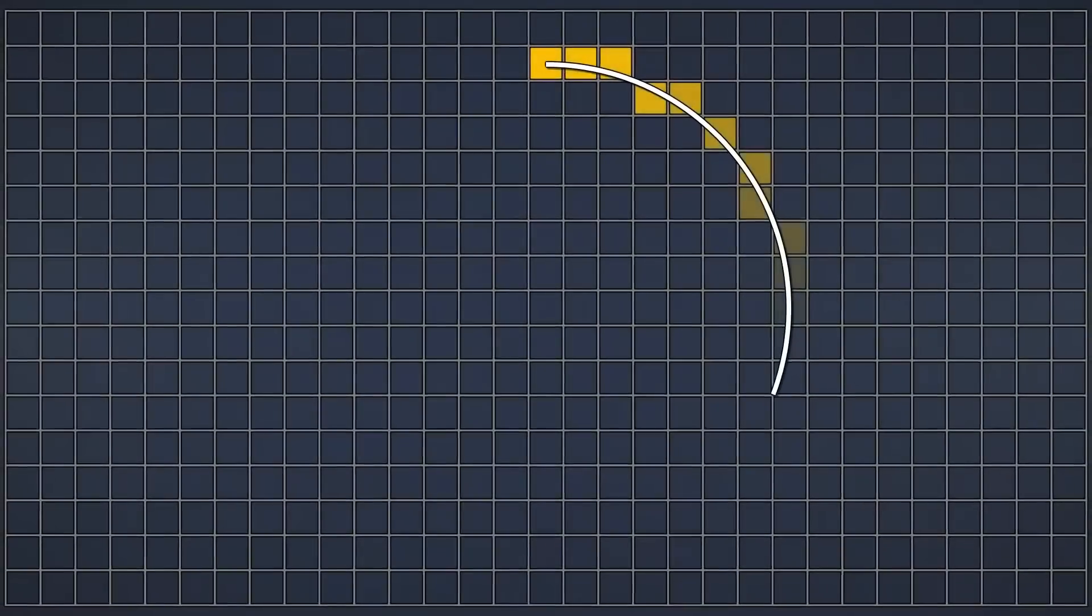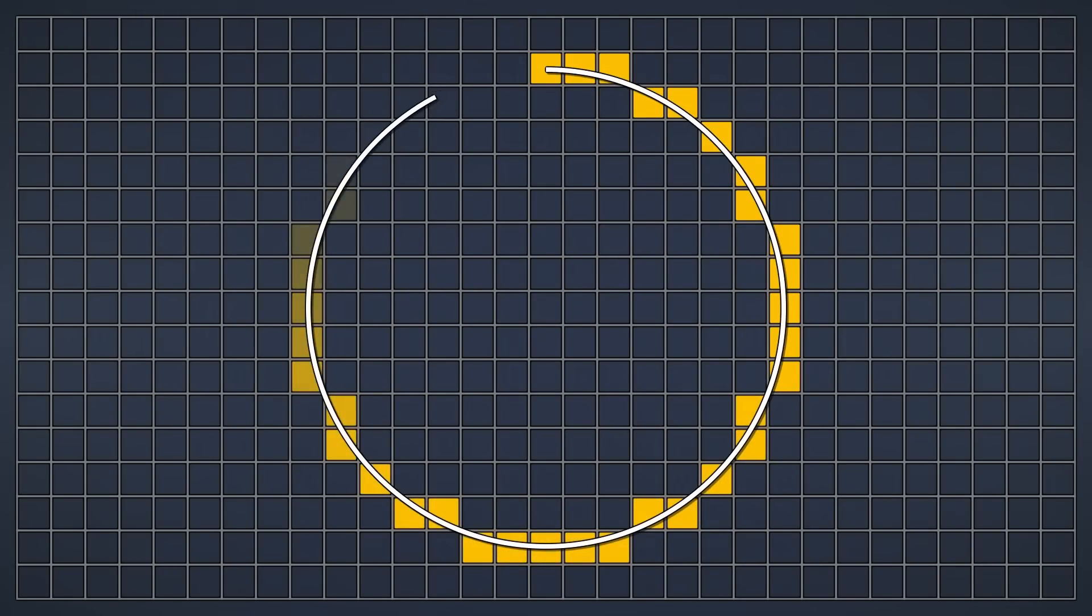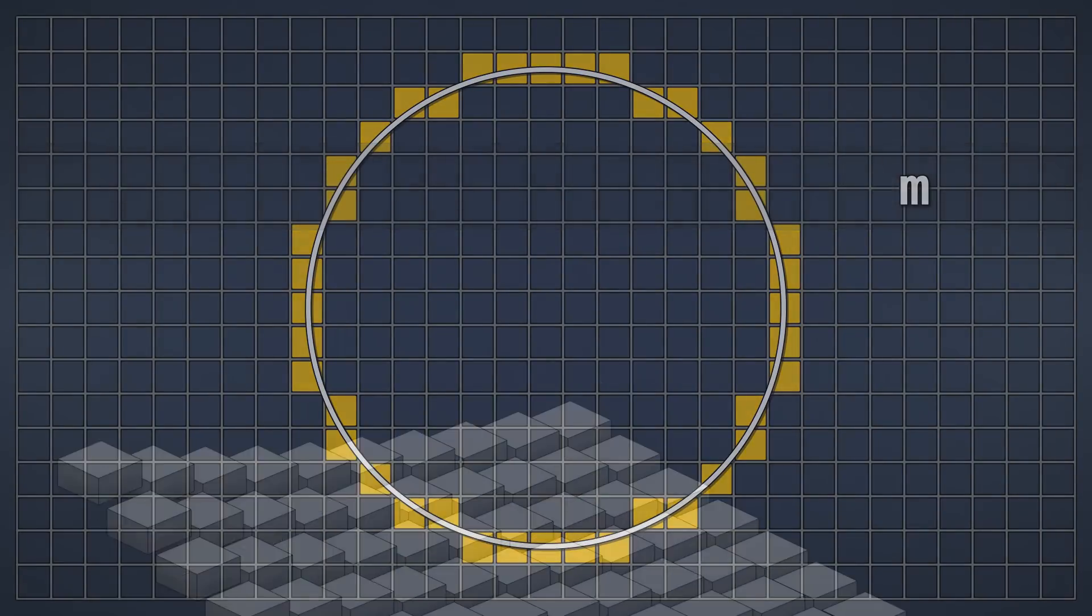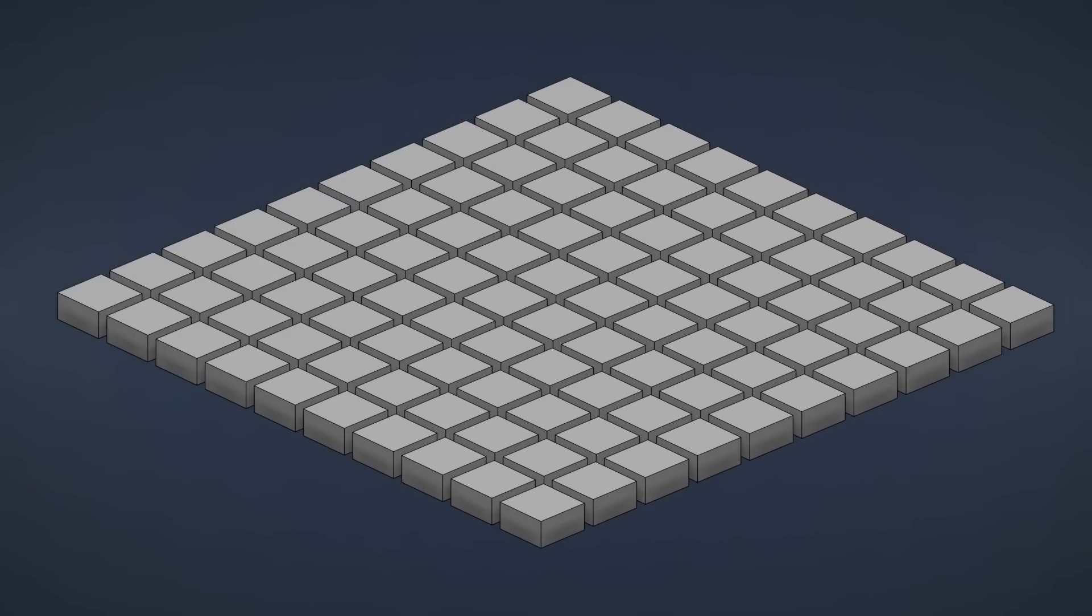Let's say we have a grid of pixels and we want to draw a circle into it. One algorithm that allows us to solve this problem is called the midpoint circle algorithm. Of course, this doesn't have to be a pixel grid, it could also be a grid of tiles in a tile-based video game, or any other kind of grid.